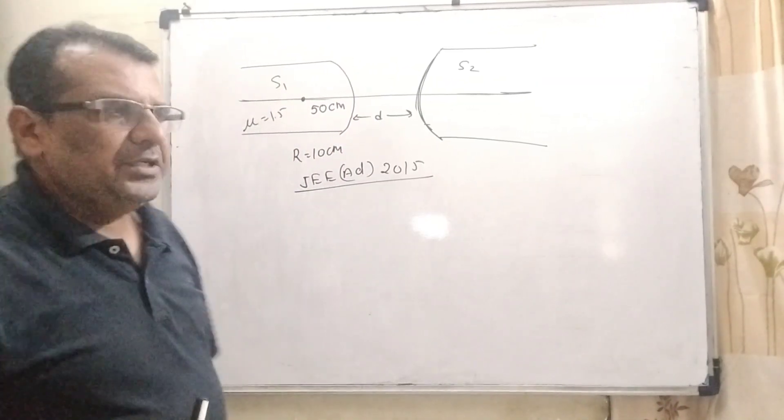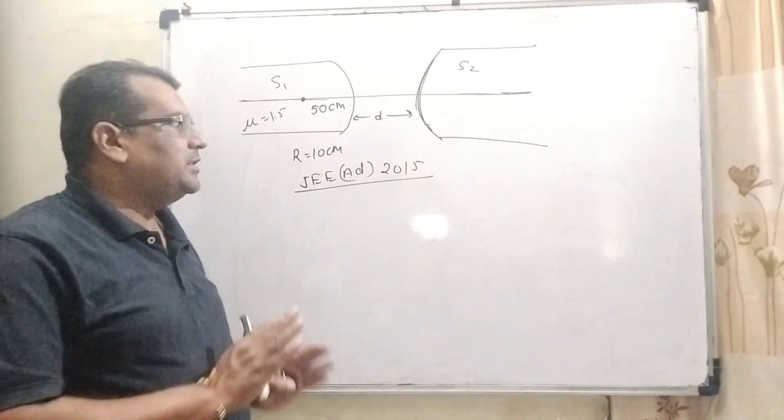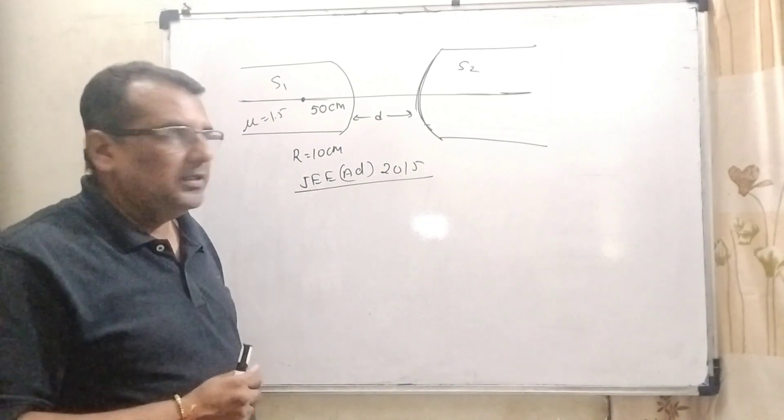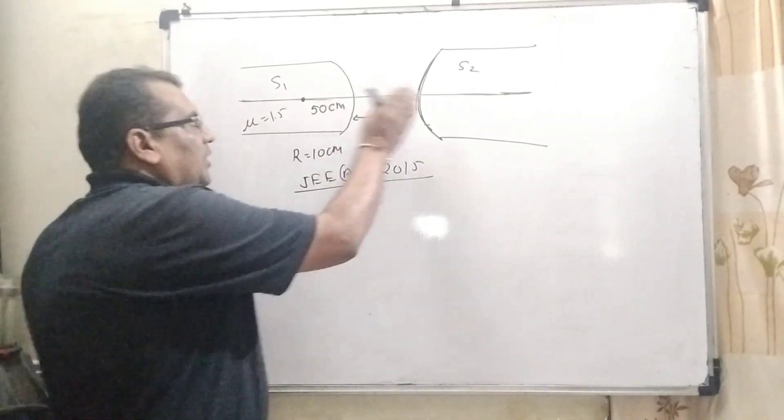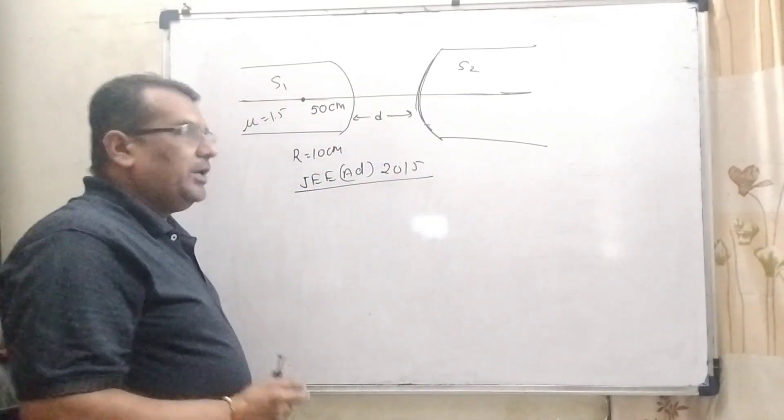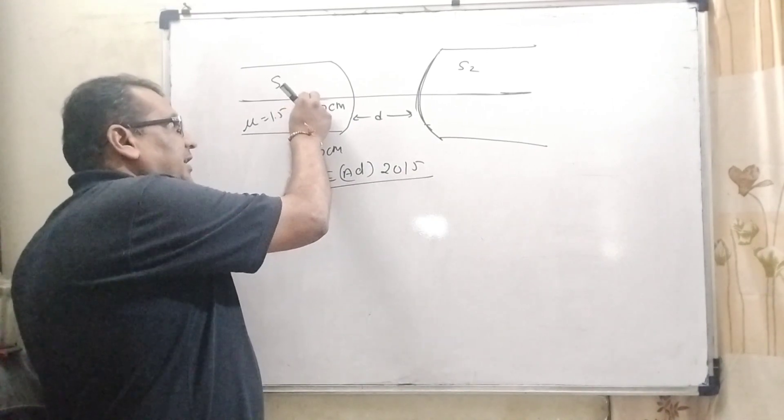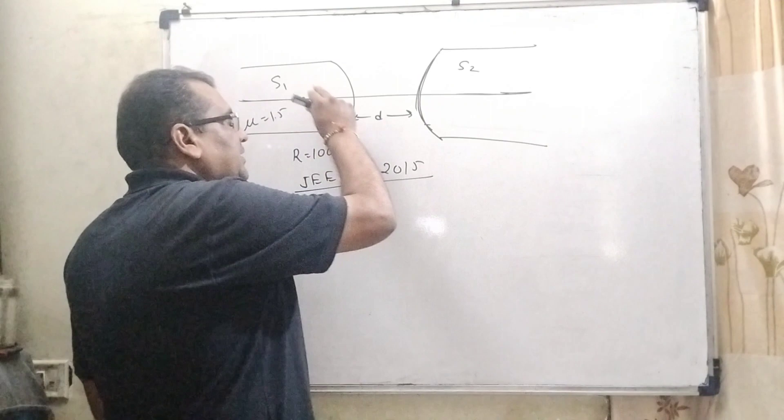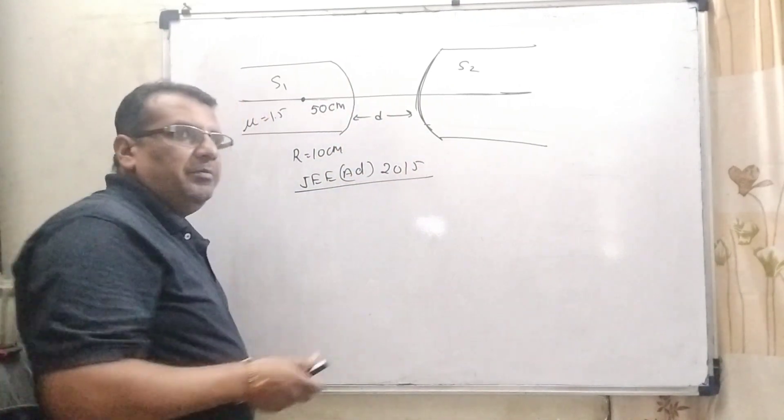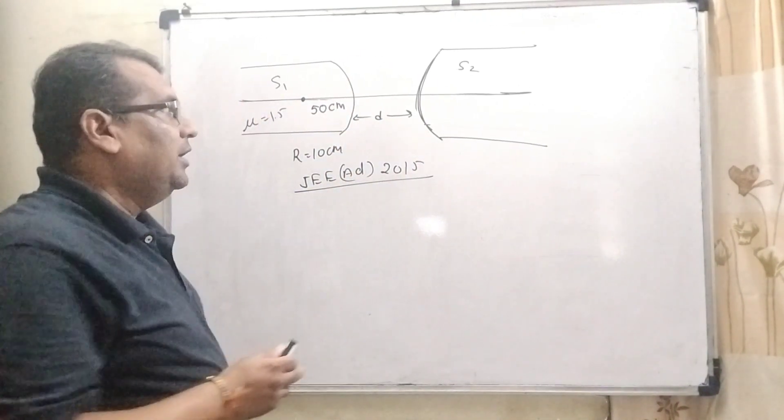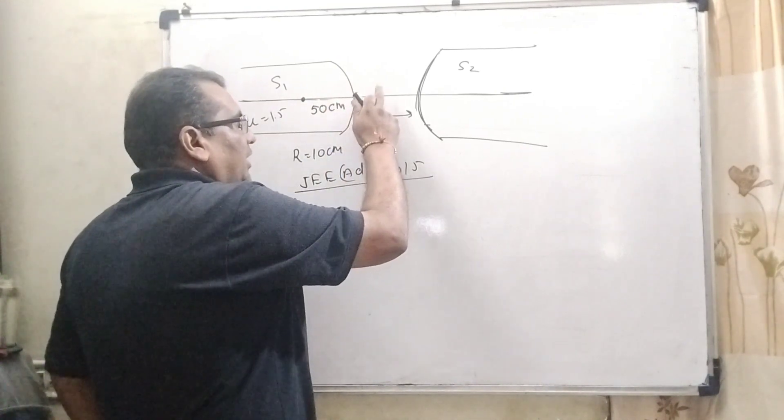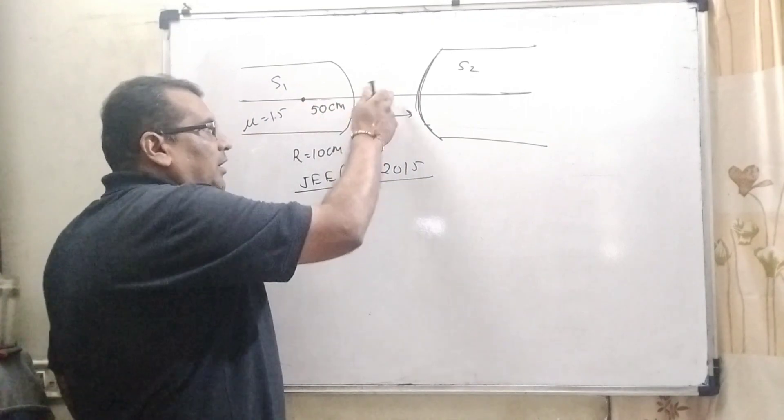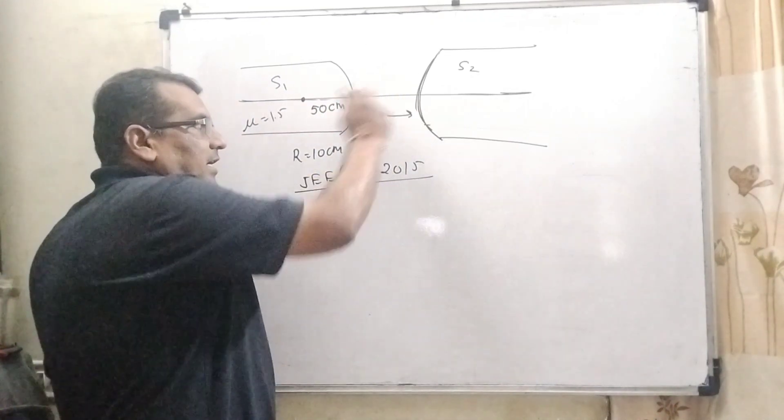As I told you many times, first we have to understand what the question says and then which formula we have to apply. Here you have given two curved surfaces. An object is placed inside, inside means denser medium. And then ray passing through denser medium to rarer medium.